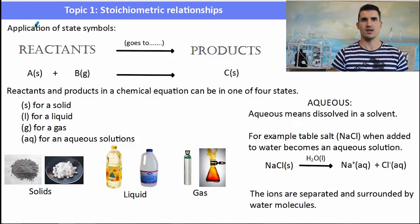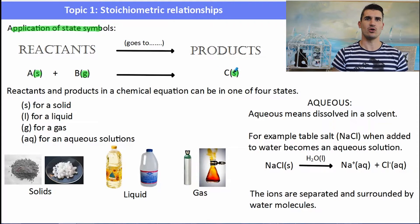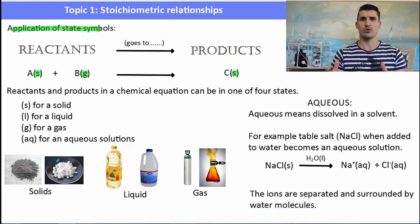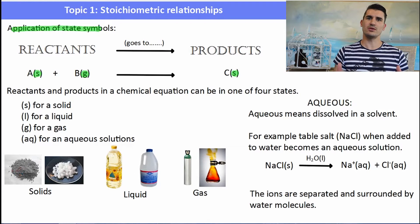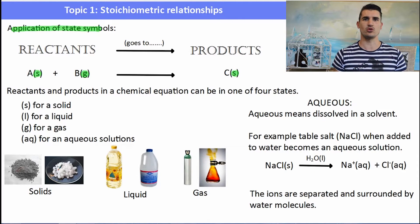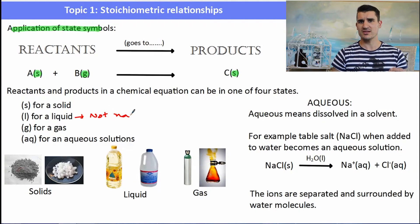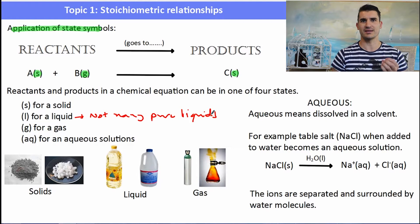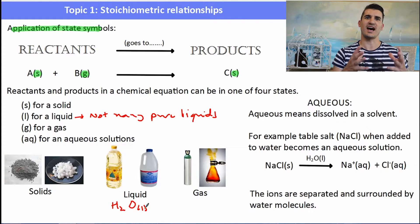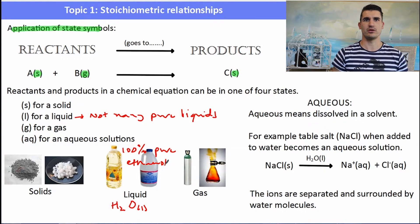State symbols are always in brackets after the chemical formula. Reactants and products can be in one of four states. Solids are easy to visualize — they could be a powder or larger chunks. Liquids in chemical terms means a pure liquid, so most things we deal with will actually be aqueous. Examples of pure liquids include deionized water, 100% pure ethanol, or a specific oil. Gases are self-explanatory — things like CO2 and O2 are expressed as gases.